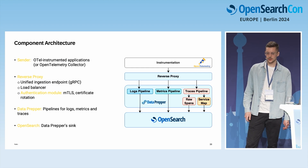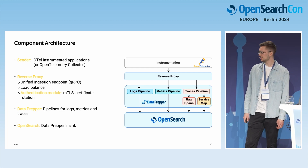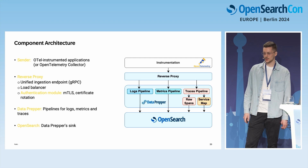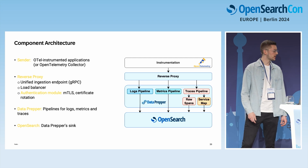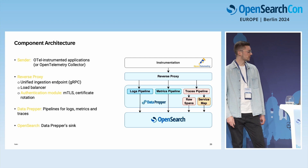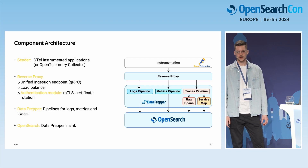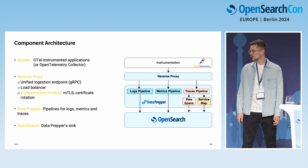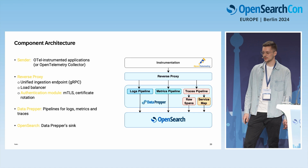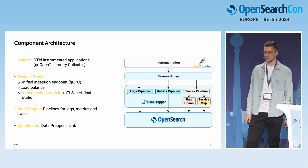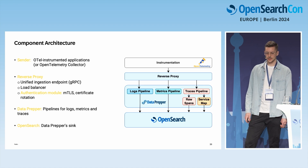I'll start by showing you the component architecture. Our components are in blue, going from bottom to top. At the bottom we have OpenSearch, which is DataPrepper's sink and the observability backend. Above that is DataPrepper with our pipelines — on the right, the three pipelines for trace analytics that David covered, then logs and metrics pipelines each. DataPrepper exposes ingestion via three different ports, and they are not directly exposed to the internet.